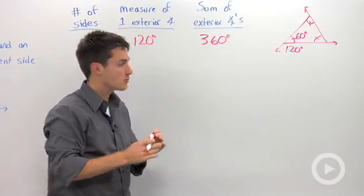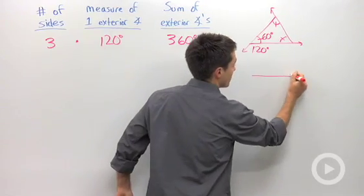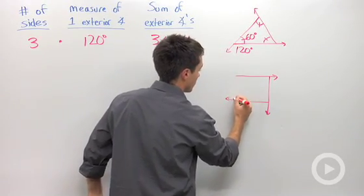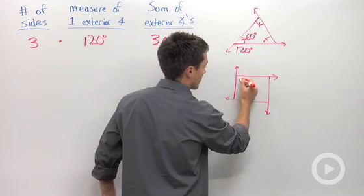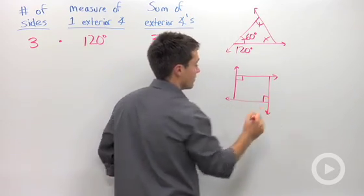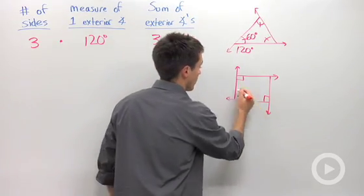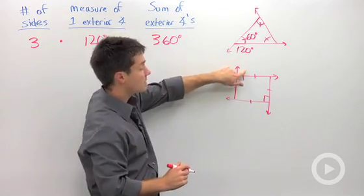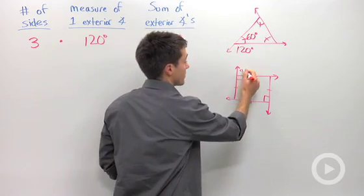Let's see if it's different for a square. I'm going to draw in a regular quadrilateral, also known as a square. We're going to assume that we have four congruent angles, four congruent sides, and we know that this has to be 90 degrees, which means its supplement would also be 90 degrees.